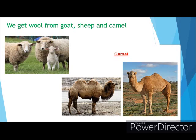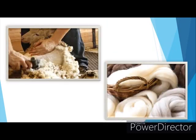We get wool from goat, sheep and camel. Woolen clothes are made up of wool. We just cut the hair of these animals — you can see one person cutting the hair of the goat. So we cut the hair of camel, goat and sheep, and thus we get wool. You can see a bundle of wool — it is very spongy, smooth and soft white color wool.